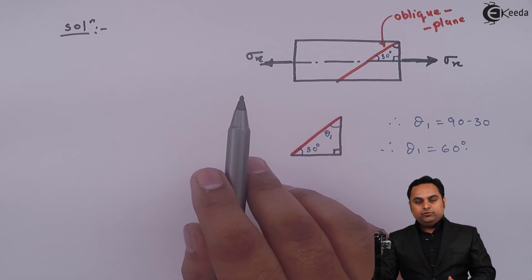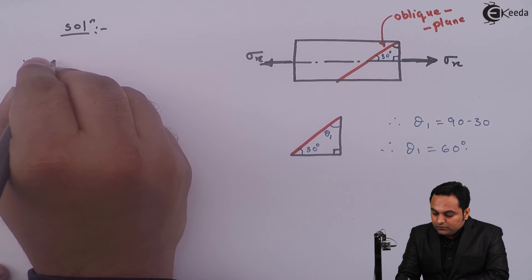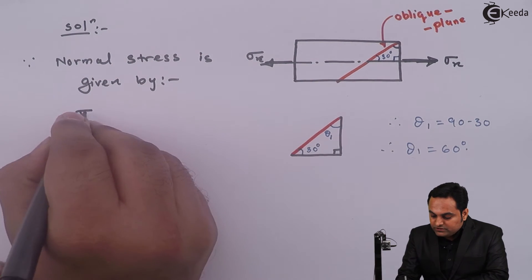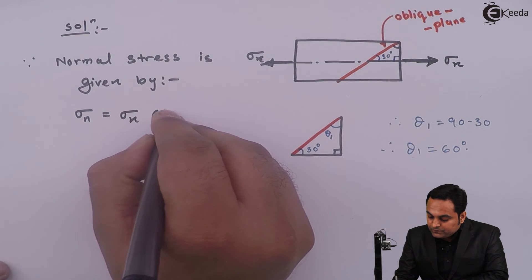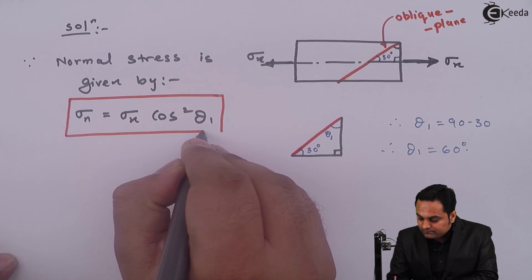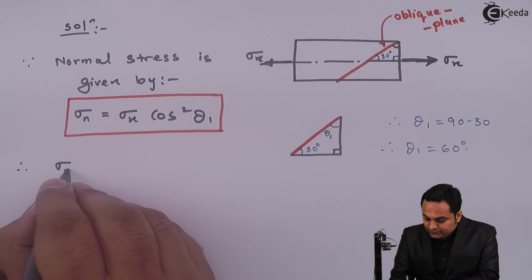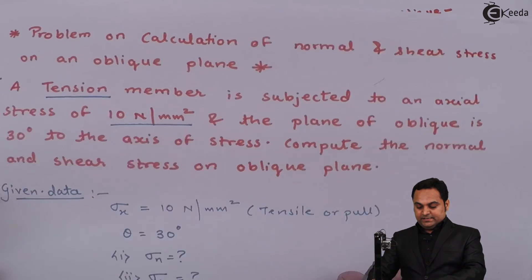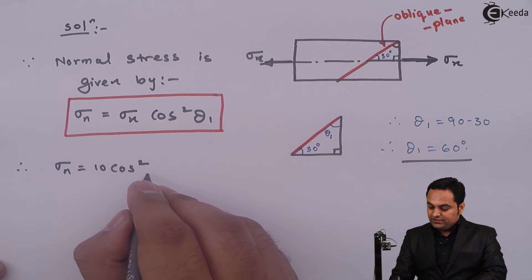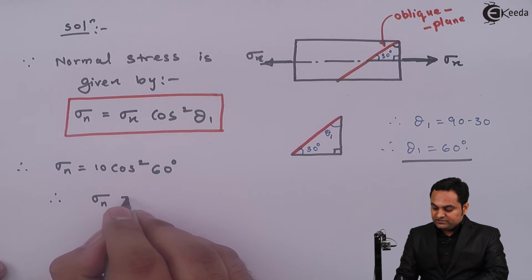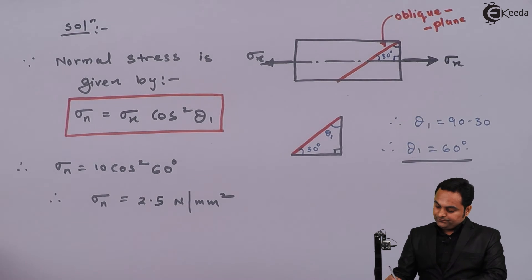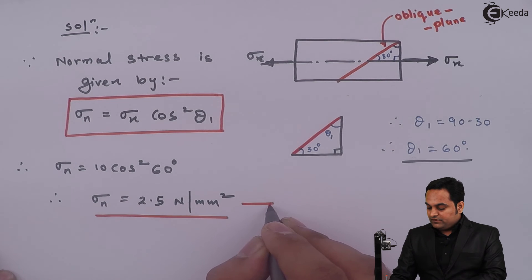After getting theta1, we can directly use the formula for normal stress: Sigma_n = Sigma_X · cos²(theta1). Substituting the values, Sigma X is 10 Newton per mm square and theta1 is 60 degrees. Therefore, the normal stress Sigma_n comes out to be 2.5 Newton per mm square. This is the first answer.